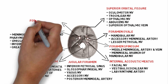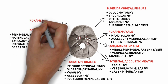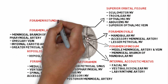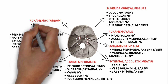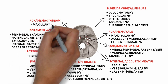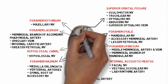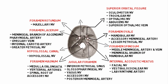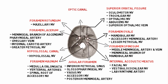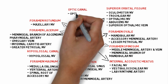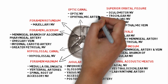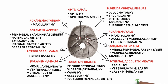The ninth one is the foramen rotundum, which contains the maxillary nerve. The tenth one is the optic canal, which contains the optic nerve and the ophthalmic artery.